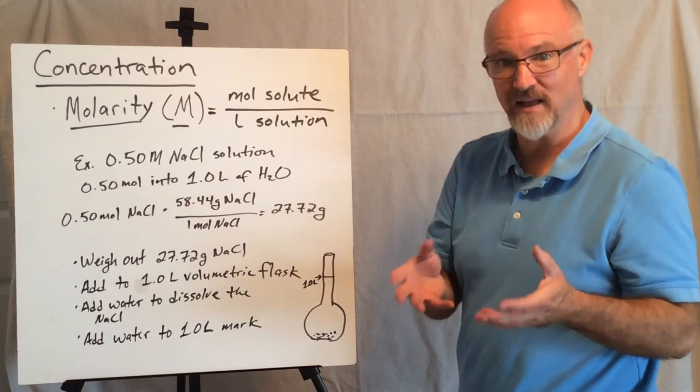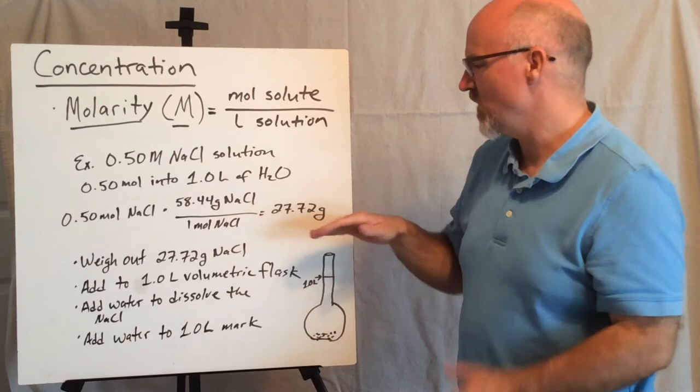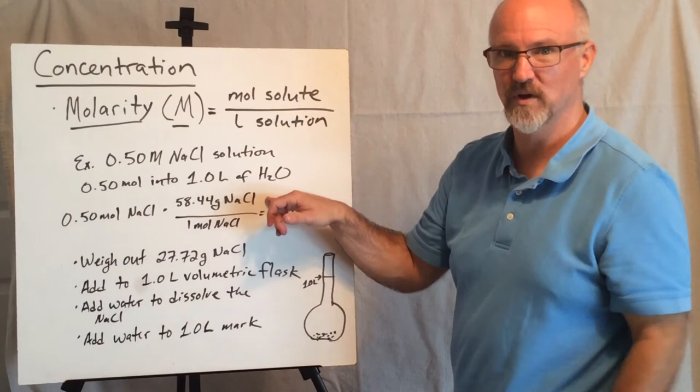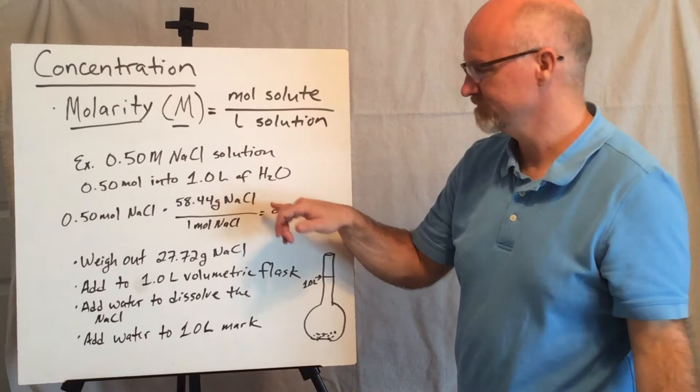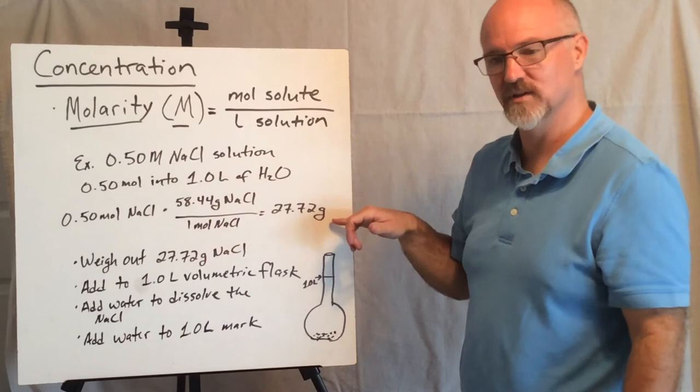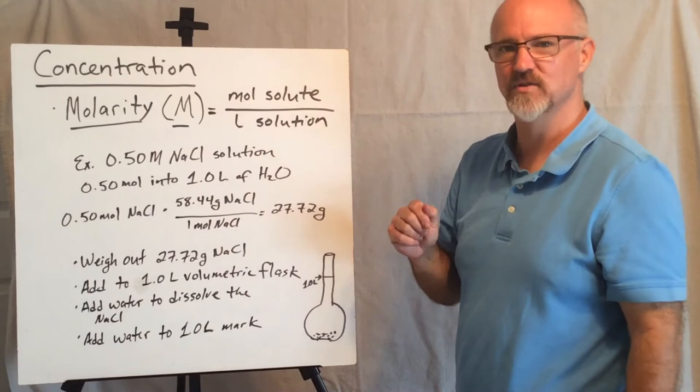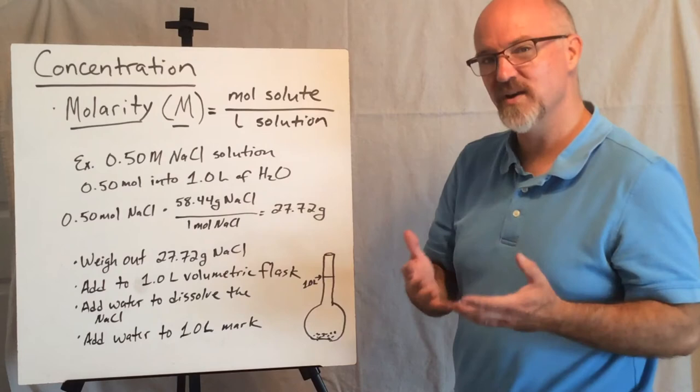So I get my balance out, a little weighing boat, get my sodium chloride, and I would weigh out half a mole. Well, the molar mass of sodium chloride is 58.44 grams. And so that's one mole, but I only need half a mole. So I do a little bit of conversion here and figure out I need to weigh out 27.72 grams of salt. So I weigh that out.